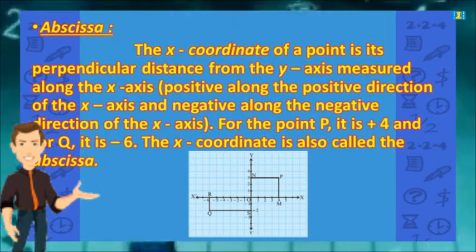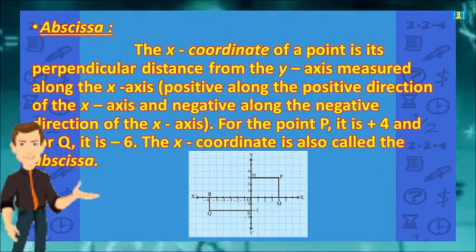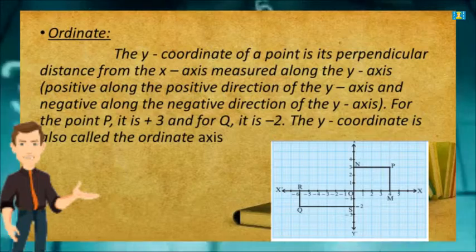For the point P it is positive 4, and for Q it is negative 6. The x-coordinate is also called the abscissa, as shown in the figure.